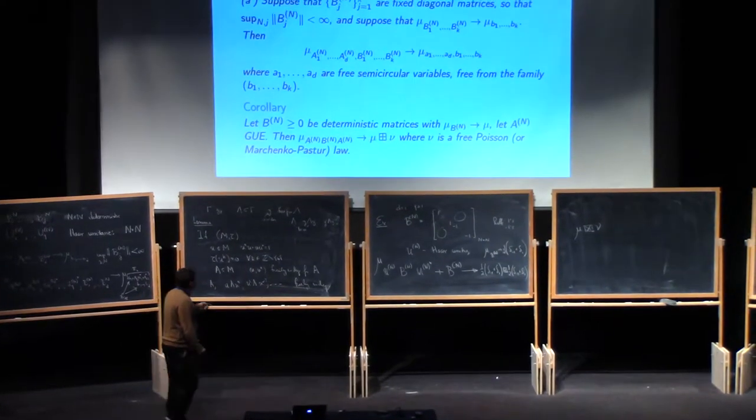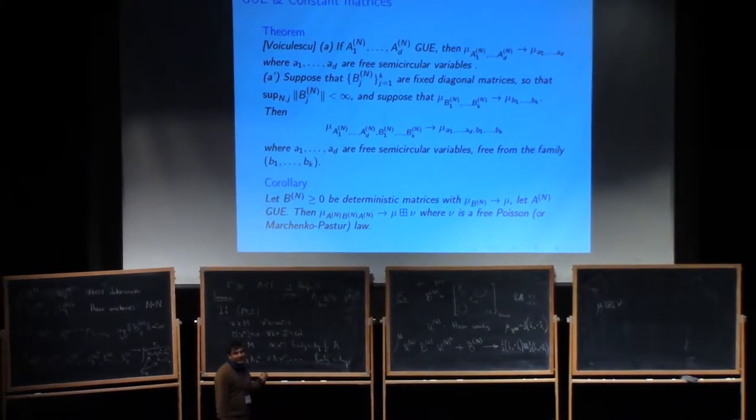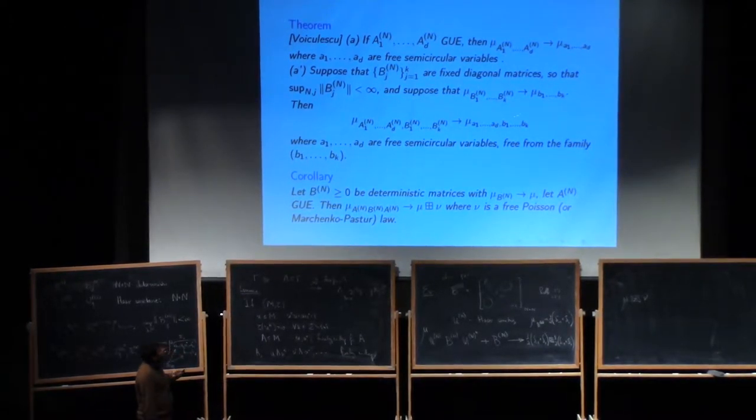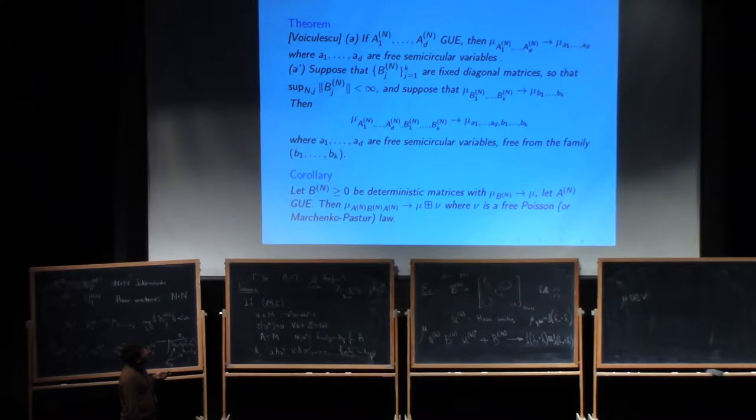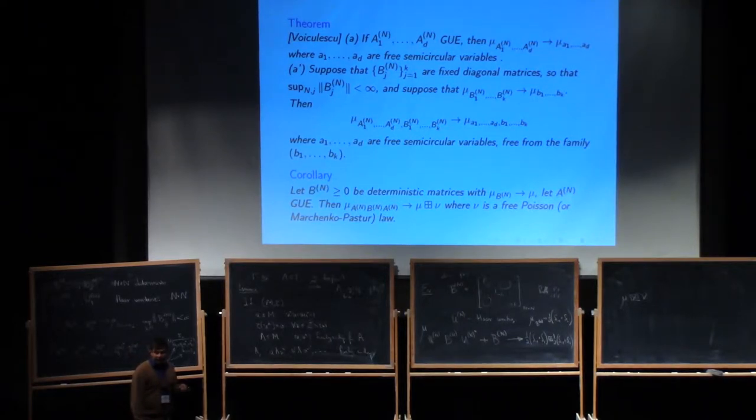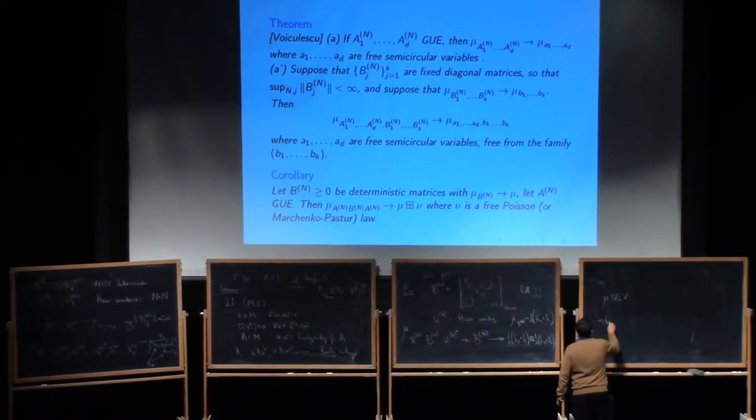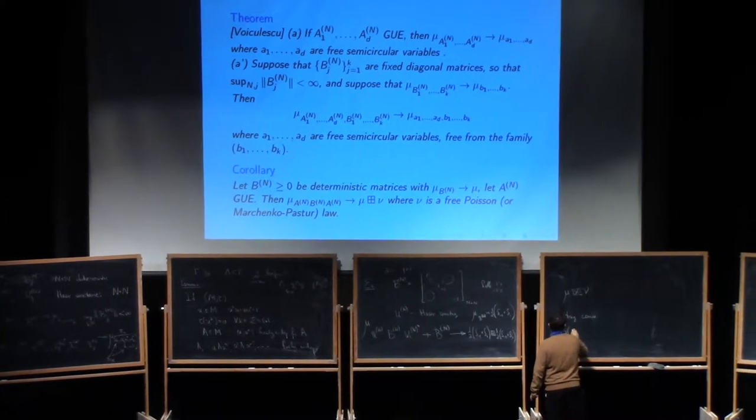And of course, there are versions of this also when these things are not square matrices. One last thing I wanted to comment about convergence. So the way I've written it here, this is weak convergence. So convergence against any test function, let's say any polynomial test function. But you can upgrade it in various ways. First of all, as Ioana explained in her talk, you can upgrade this to almost sure convergence. Moreover, as Roland mentioned, you can even make certain that not only does the trace of a polynomial in these matrices converge to the corresponding trace here, but even the operator norm does. So there is this phenomenon which is called strong convergence.